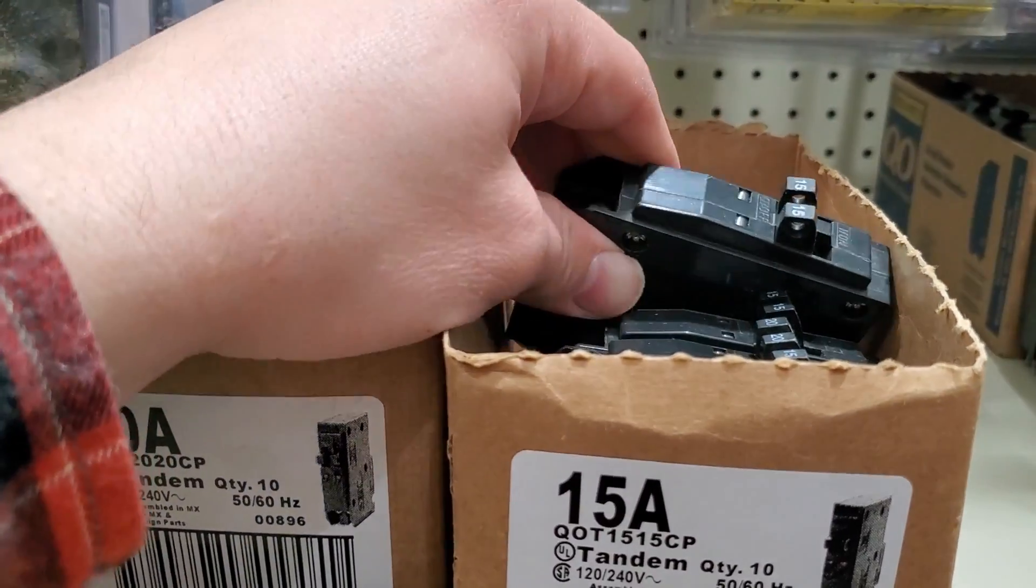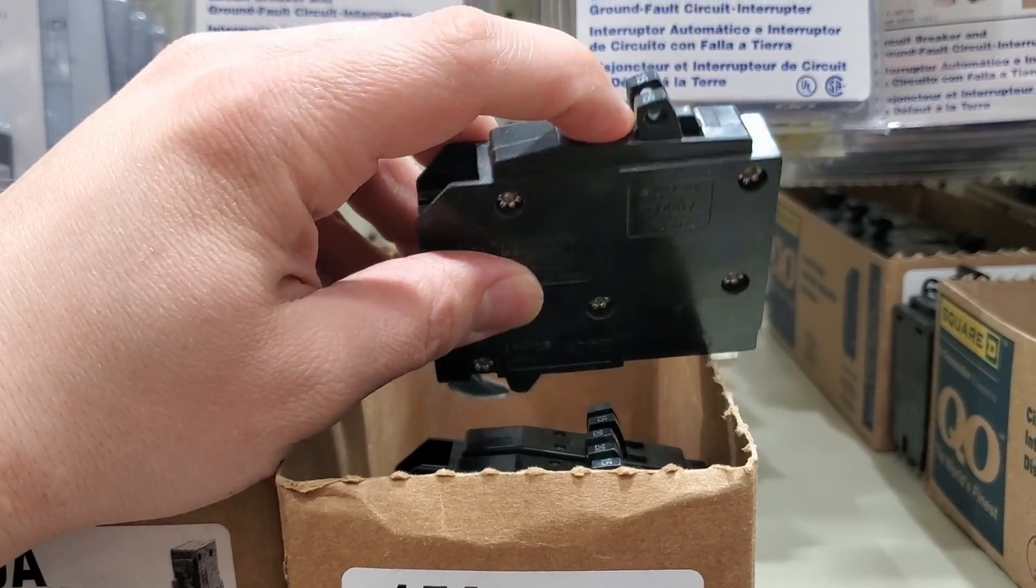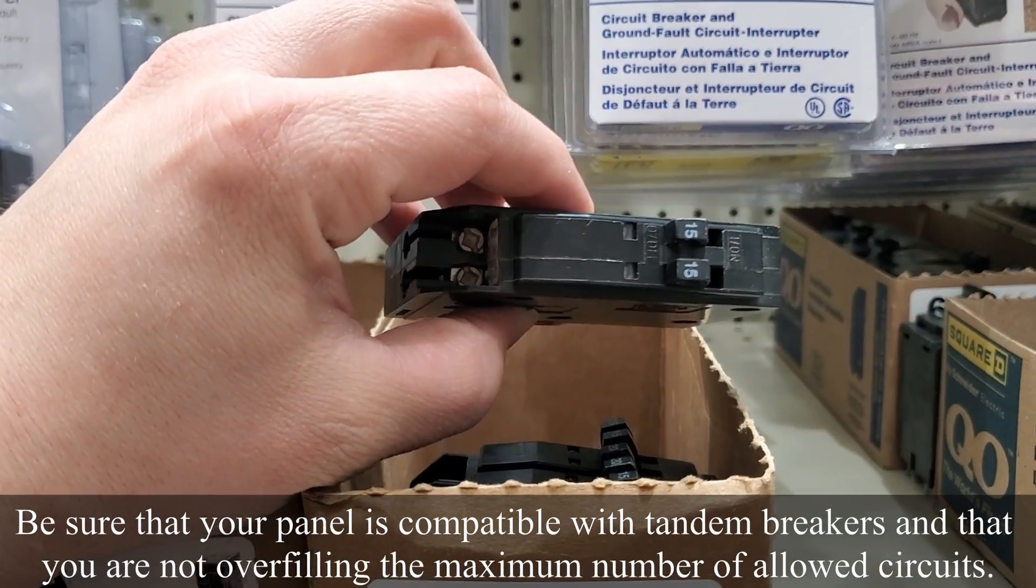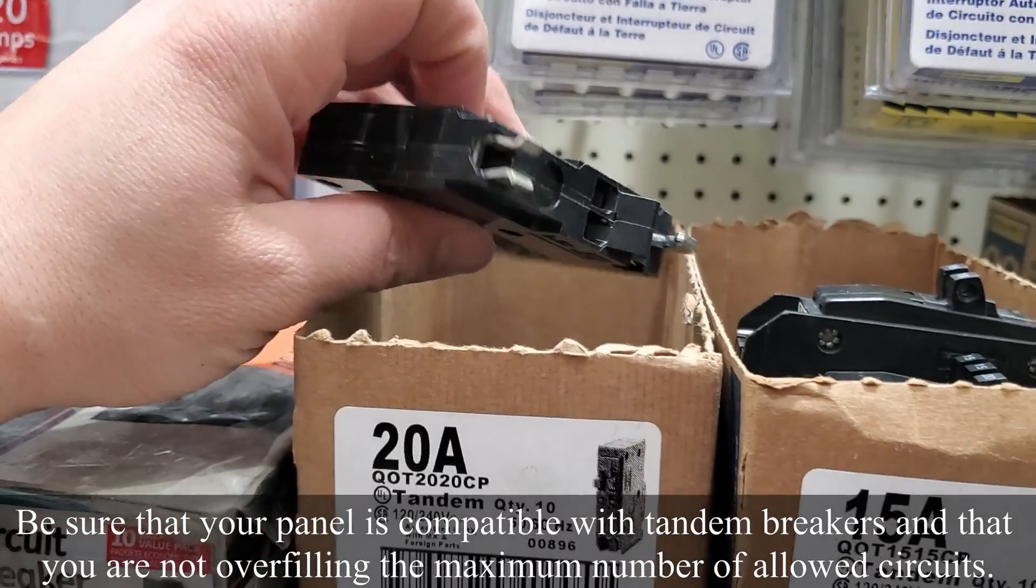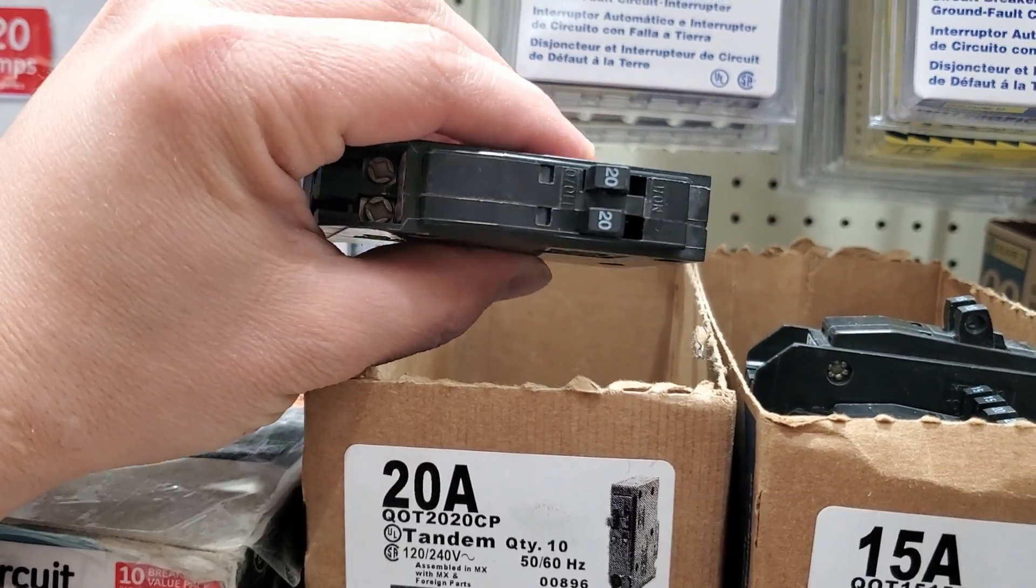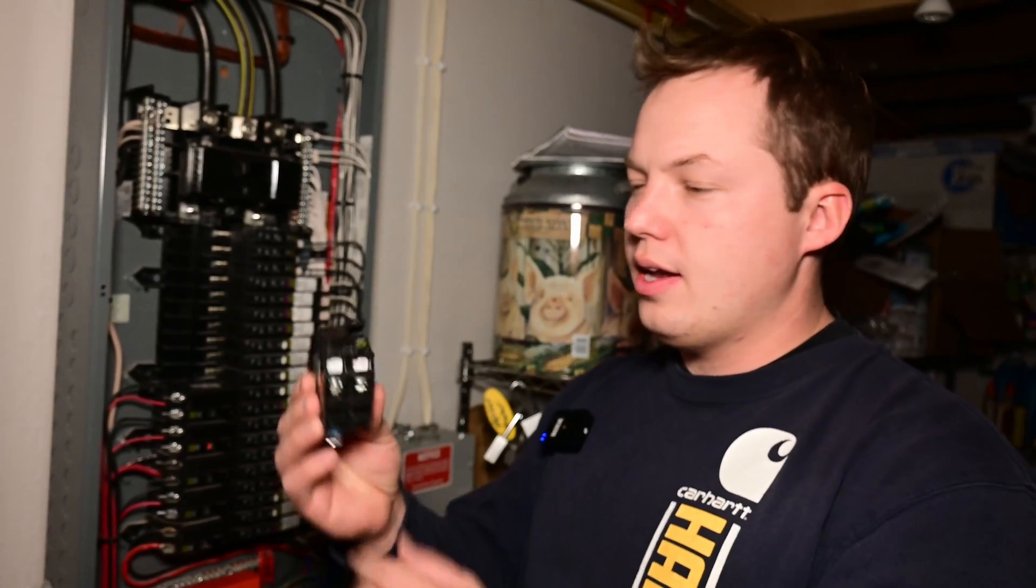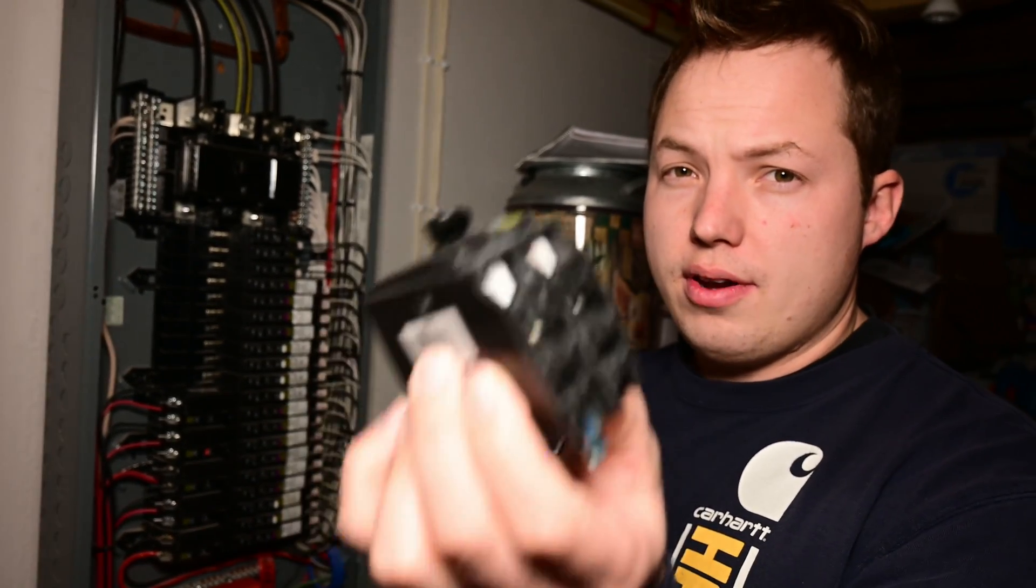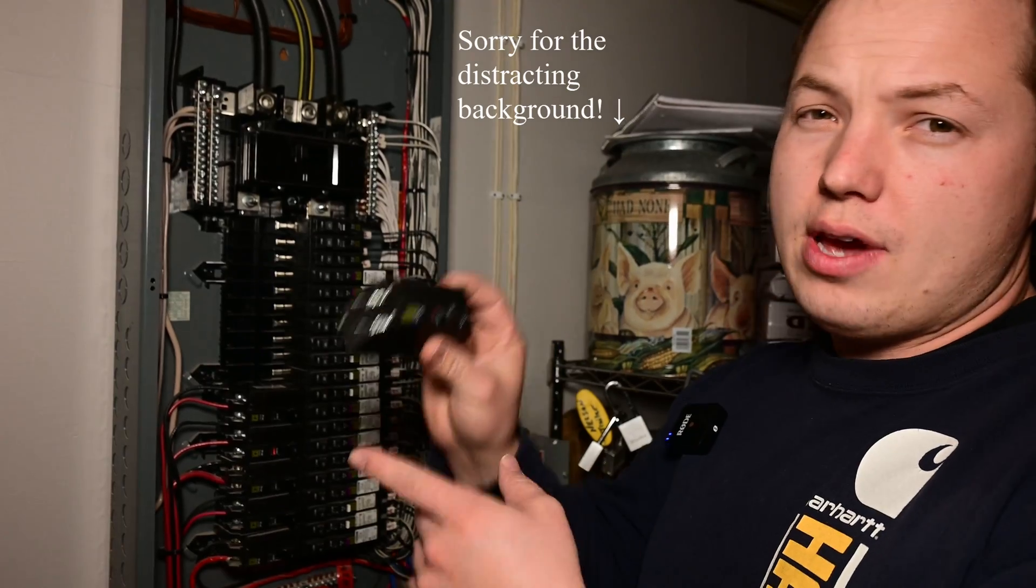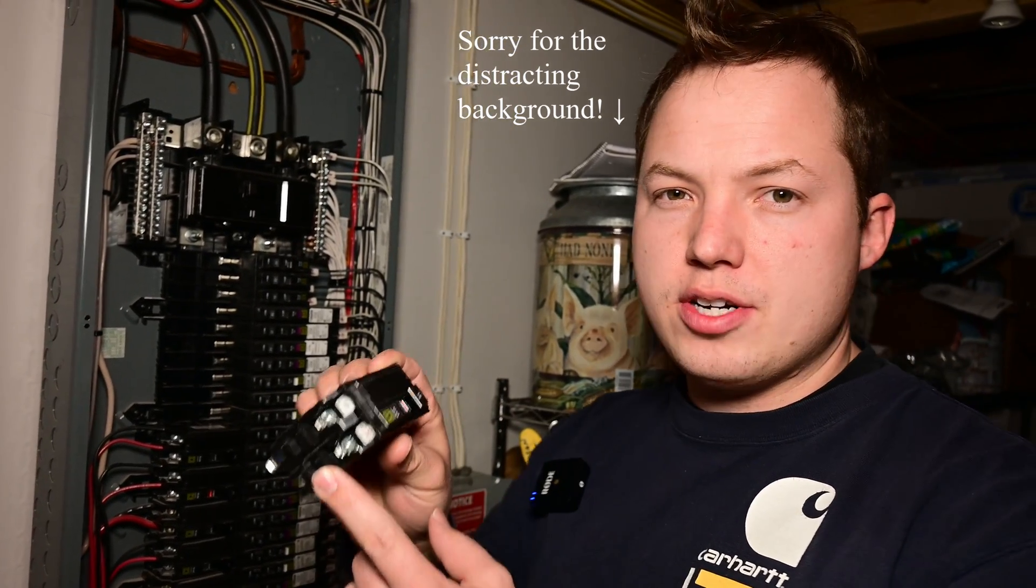If you do need to free up some space in your panel to add that, then you can use a couple of these tandem breakers to increase the space that you have available inside of your panel. This isn't my preferred method, but if that's the only option you have, it might be the way to go. Now the breaker that we're using here is a 15 amp double pole 240 volt breaker. If you have space, this is going to be your best option for installing the sense energy monitor.